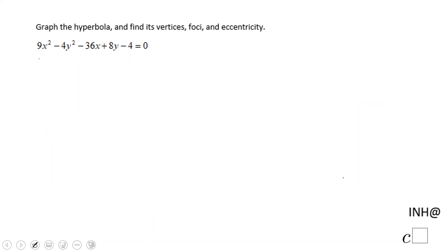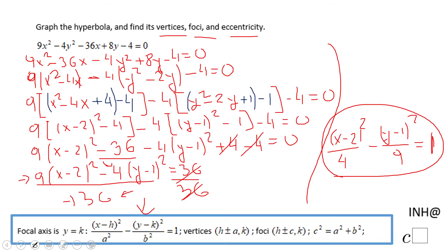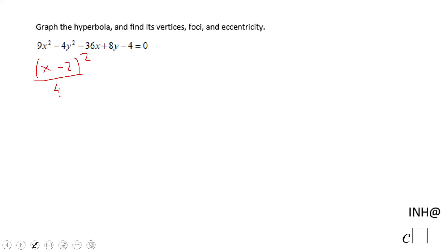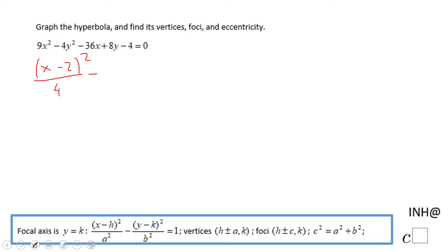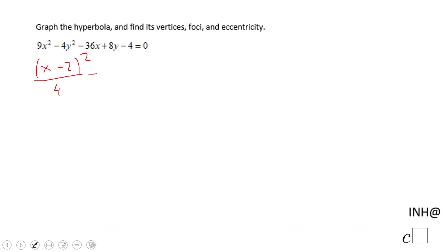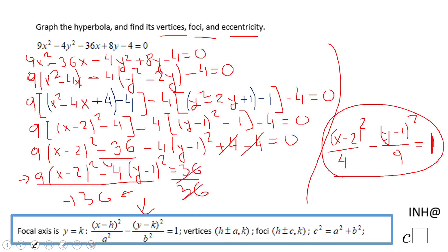So I'm going to copy that form: (x - 2)²/4 - (y - 1)²/9 = 1.